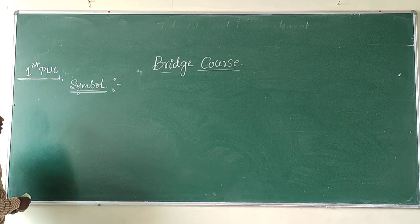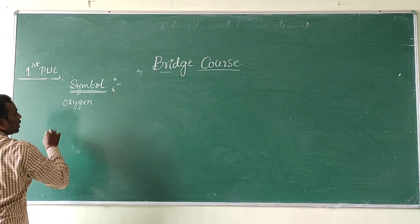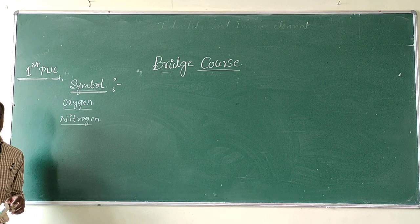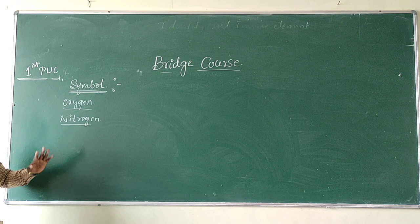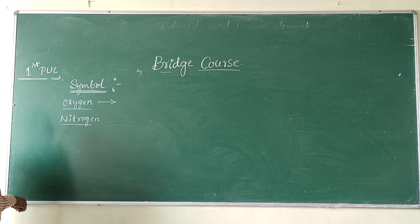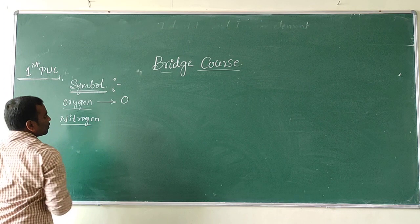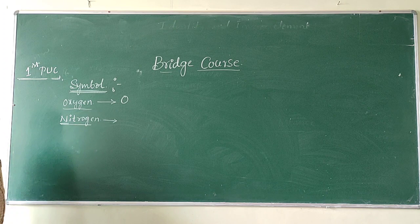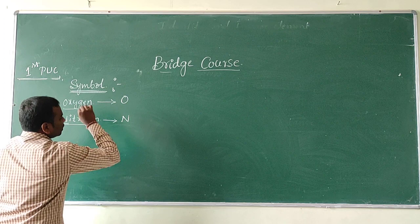For example, oxygen — this is an element. Another example is nitrogen. See how to derive the symbol: we take the first letter of the element name. For nitrogen, the first letter is N. So N is the symbol of nitrogen.